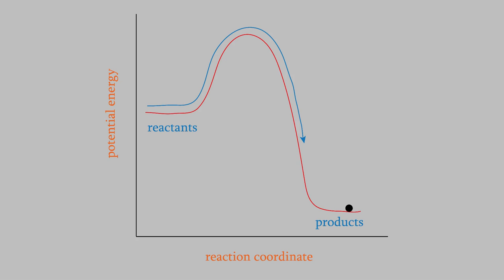Knowing the velocity distribution is useful because it can help us understand the rates of chemical reactions. The fastest molecules are the most likely to react when they collide, because their energies are more likely to exceed the activation energy for the reaction.